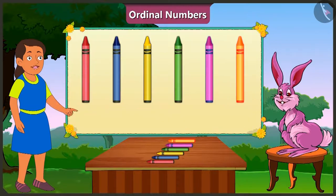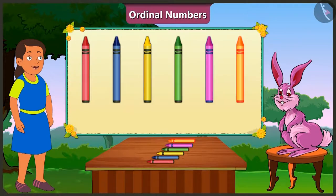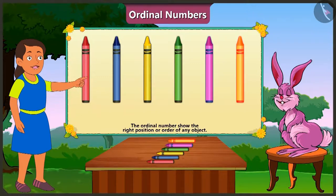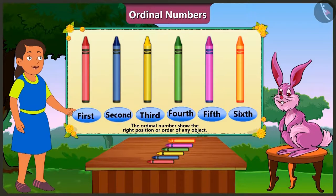If we want to count objects, we have to say 1, 2, 3. And if we have to tell the position or place of objects in a line, then we have to say 1st, 2nd, 3rd — ordinal numbers.